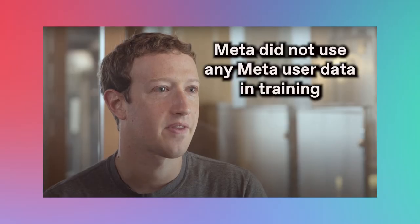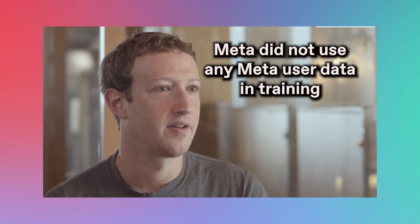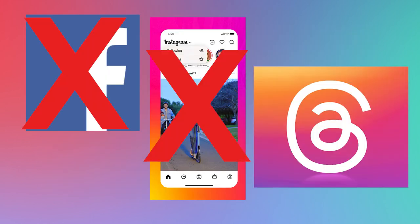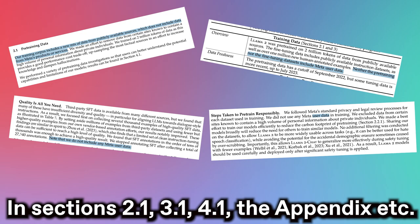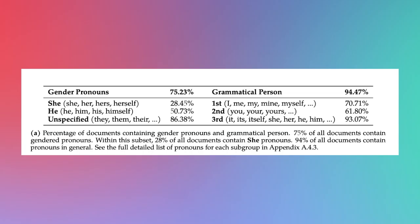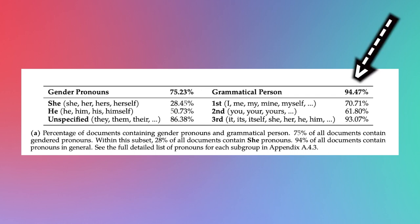Regarding safety, Meta is very clear that they did not use any Meta user data in training — no Instagram posts, Facebook profiles, or Threads posts. To avoid baking in societal biases, Meta ensured a diverse training set with strong demographic representation. For example, 75.23% of documents contain gendered pronouns, and almost 94.5% contain grammatical person pronouns like I, me, you, and so on.